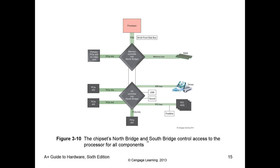The analogy is a fast lane on a freeway: if slow traffic is in the fast lane, it slows everything down. That's why slow devices are separated onto the south bridge — so the north bridge stays fast. If anything slow were placed on the north bridge, it would cause everything else to slow down.